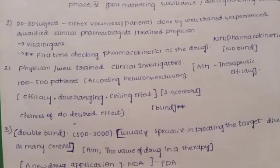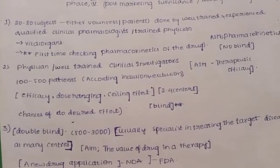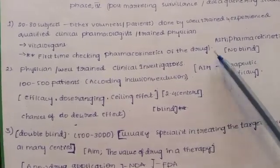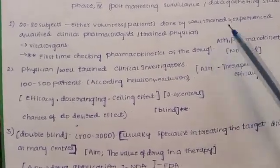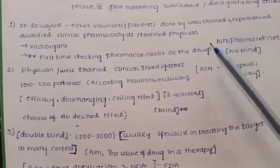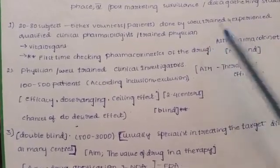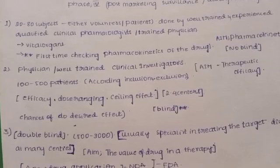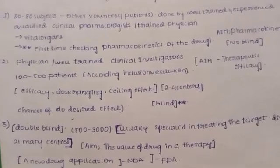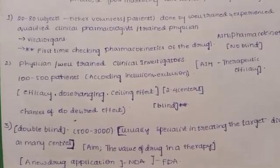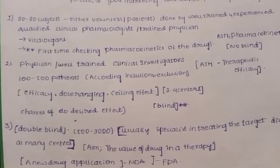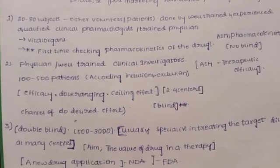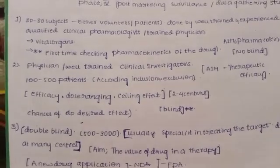Phase 1 uses 20 to 80 subjects — either volunteers or patients — done by well-trained and experienced pharmacologists or trained physicians. Phase 1 is conducted by well-trained clinical pharmacologists. Vital organs are checked for the first time, and pharmacokinetics of the drug is determined for the first time in Phase 1.